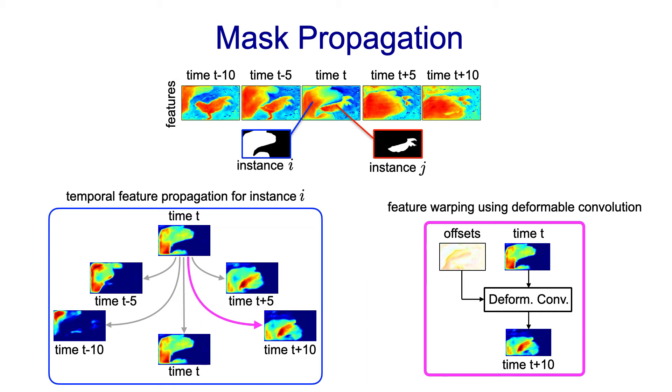To effectively propagate features to different frames, our model needs to learn to predict sampling offsets that capture motion between object instances in different frames. We note that our model successfully learns to predict such motion offsets without any explicit ground truth alignment between frames.